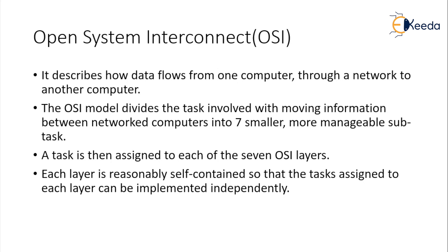The OSI model divides the tasks involved with moving information between networked computers into seven smaller, more manageable sub-tasks. A network can be wired or wireless. A task is then assigned to each of the seven layers.